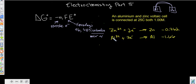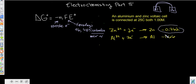We write out the two half-reactions in reduction form because that's what our table uses. So zinc two-plus plus two electrons gives us negative 0.762, and aluminum gives us negative 1.66. Now we have to decide which one is going to be oxidized and which one is going to be reduced. I look for the one that's going to be reduced — that's the one you leave the same. Reduction occurs in the one that's closest to a positive number.